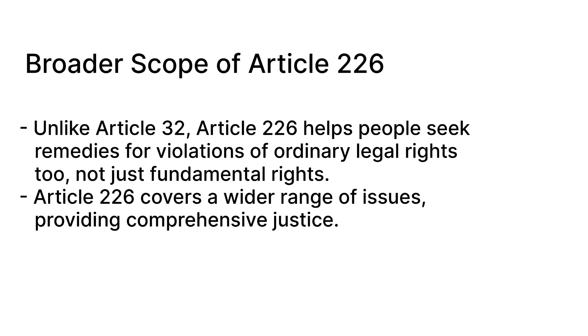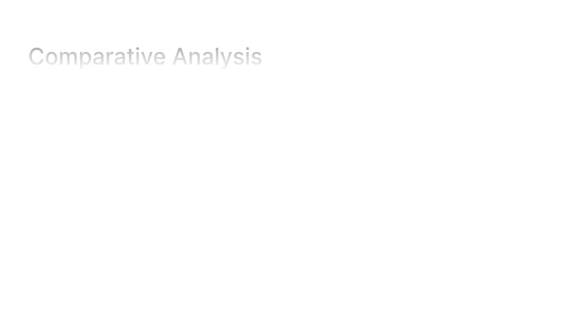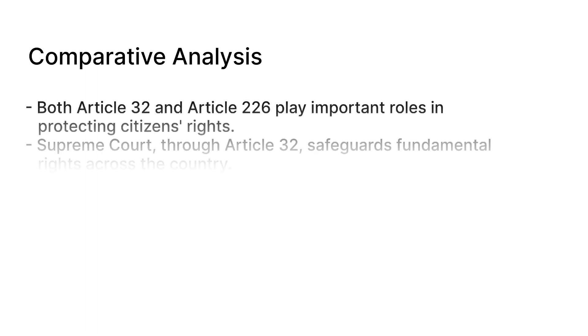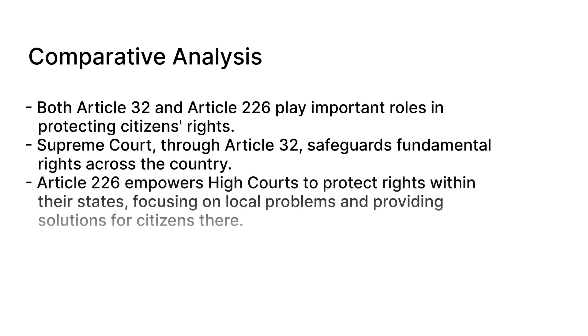Now, let's see the comparative analysis — we will compare Article 32 and Article 226. Both articles play an important role in protecting citizens' rights, but they operate at different levels of the judiciary. The Supreme Court, through Article 32, safeguards fundamental rights across the whole country. Meanwhile, Article 226 gives only the High Courts the power to protect rights within their respective states.